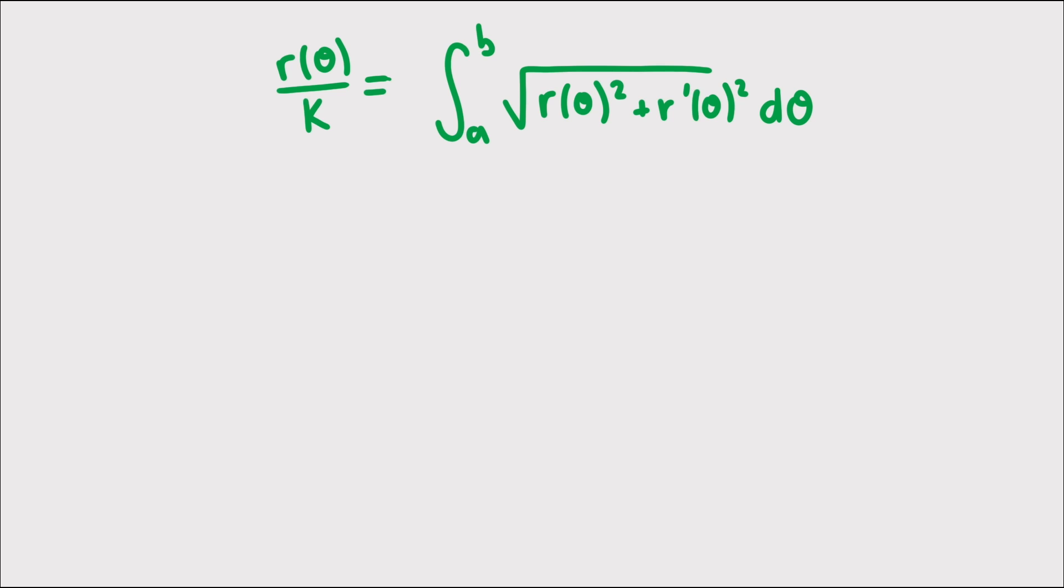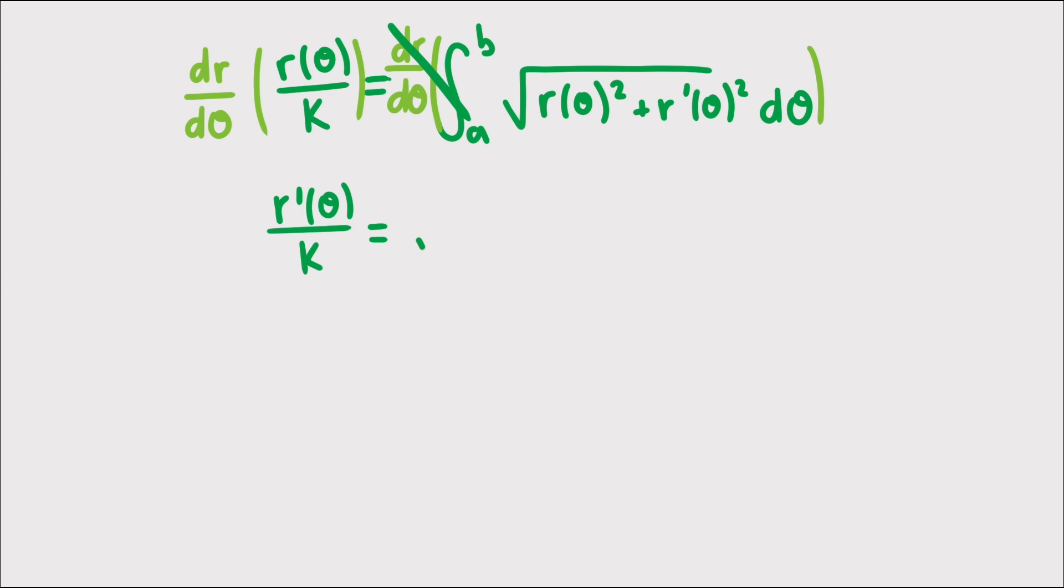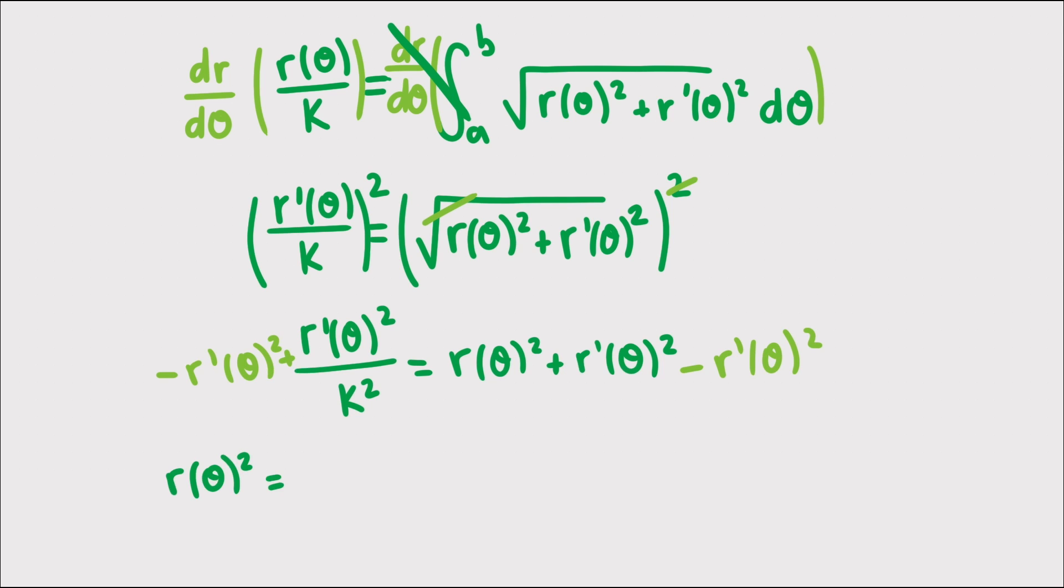I can eliminate the integral by using a derivative and the fundamental theorem of calculus. I take the derivative of both sides and end up with r prime of theta divided by k on the left, and using the fundamental theorem of calculus I end up with this square root expression. Now we are past one hurdle. Let's just keep solving for r of theta like it was an unknown value and see where it leads us.